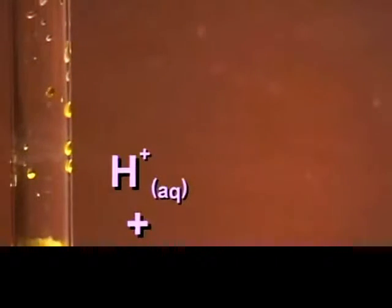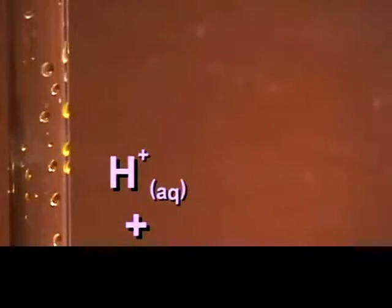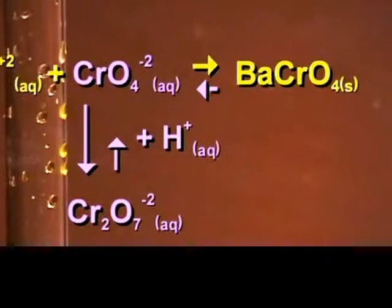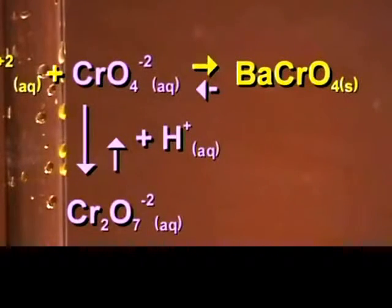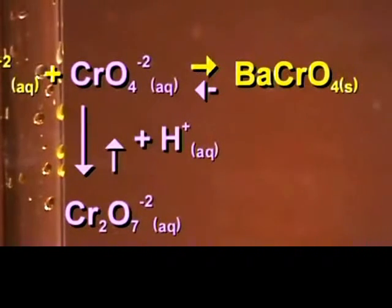If we take some of the solid barium chromate and add 6 molar nitric acid, we see that the solid goes back into solution and the solution turns orange. Adding the nitric acid provides a source of hydrogen ions. The hydrogen ions combine with the chromate ions and shift the equilibrium in the reverse direction to form dichromate, and the solution turns orange.